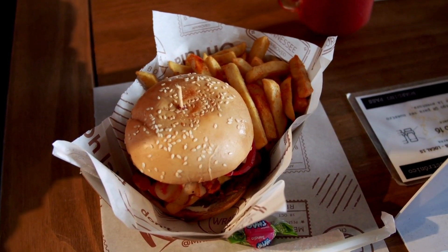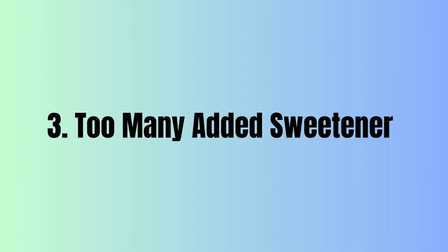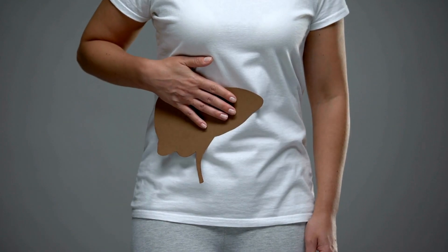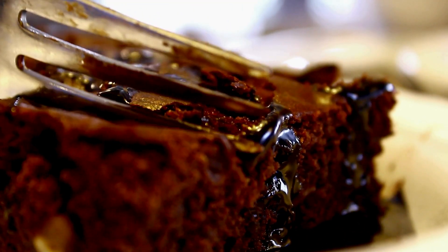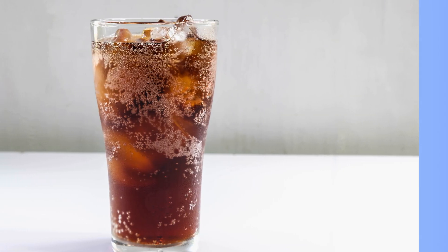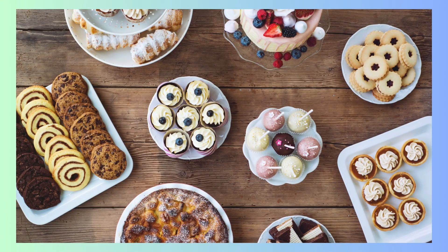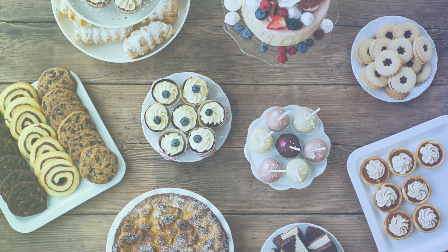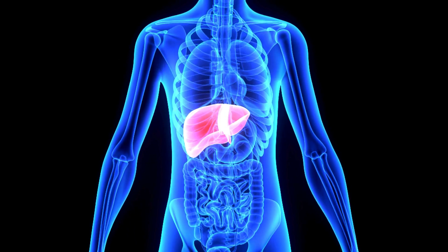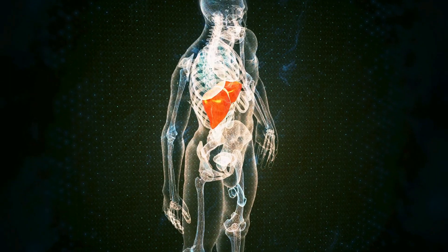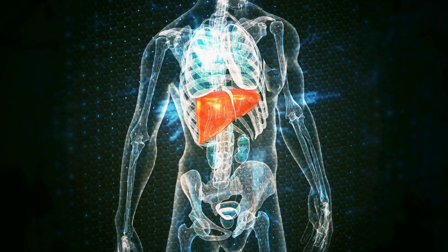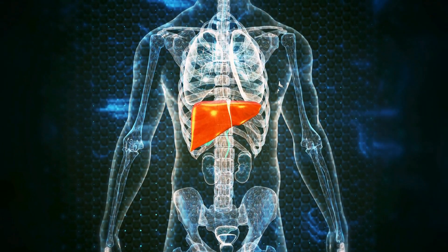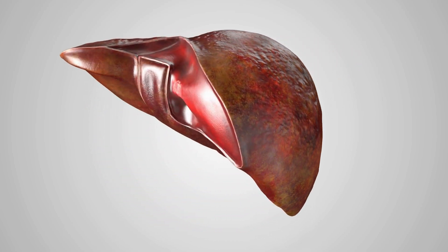The third main cause of fatty liver disease is eating too many foods with added sweeteners. It's crucial to understand that not just fats, but also sugary foods can play a significant role in the development of fatty liver disease. The sweeteners we consume, particularly those found in processed foods and sweetened beverages, have a direct impact on our liver's health. When we eat a lot of sugar, our body converts these sugars into free fatty acids, which begin to accumulate in the liver, leading to fatty liver. When the liver is clogged up with fat, it can't do its job properly, which may escalate into more severe liver conditions if not addressed.